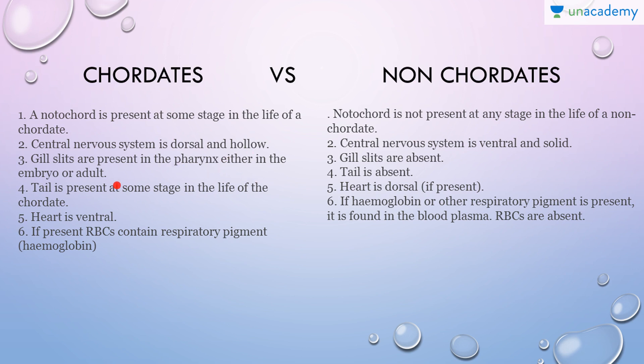The gill slits are present in the pharynx in chordates, either in the embryo or the adult. For example, we do not have gill slits in our pharynx as adults, but they are present at the embryonic stage. So gill slits are present at some stage in chordates, whereas they are absent in non-chordates.